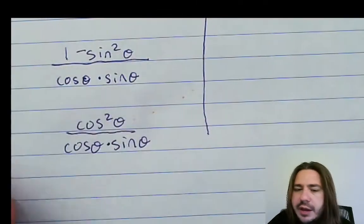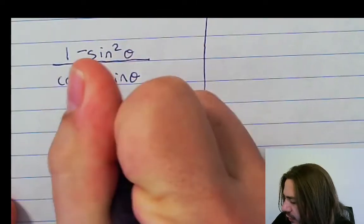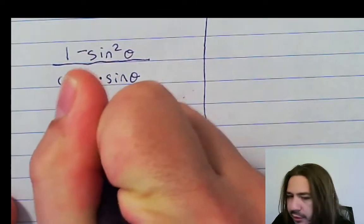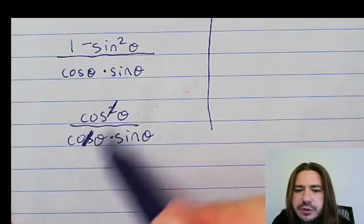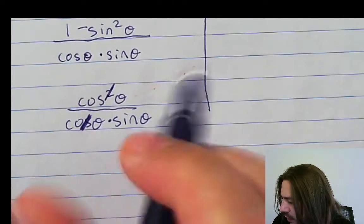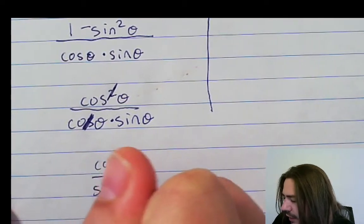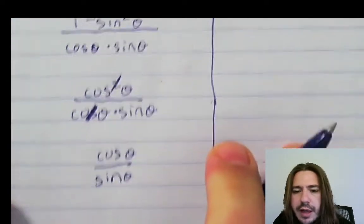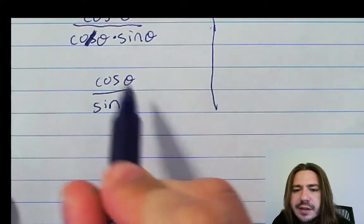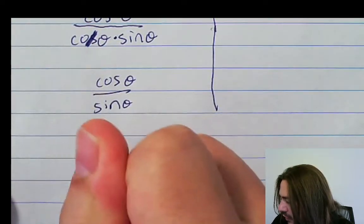So when I go ahead and reduce one of those cosine, so I'll just scratch out the squared and scratch out that. This is going to reduce to 1, leaving me with cosine theta over sine theta. And our quotient identity says that this is equivalent to cotangent theta.